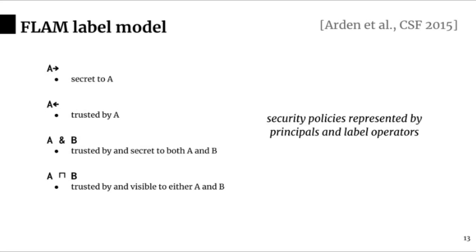The security labels used to define the security policy of Viaduct programs are drawn from the FLAM label model as described in a CSF paper by Arden et al. Labels are represented by principals and label operators. For example, A right-arrow defines a policy that means A's confidentiality, or secret to principal A. A left-arrow defines a policy that means A's integrity, or trusted by principal A. A ampersand B, or A and B, defines a policy that has both A's and B's confidentiality and integrity, meaning secret to both A and B and trusted by both A and B.